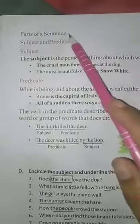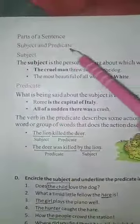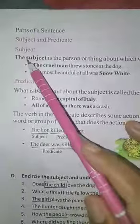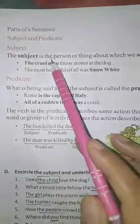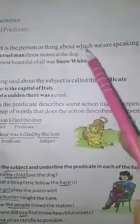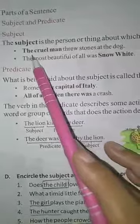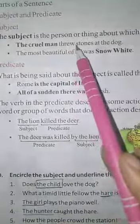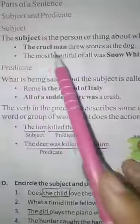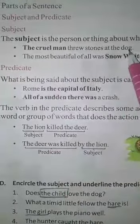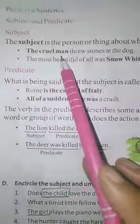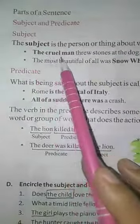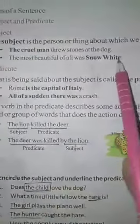Next, parts of a sentence. What are the parts of a sentence? Subject and predicate. What is a subject? The subject is the person or thing about which we are speaking in the sentence. As you can see in the example, 'the cruel man' is the subject in this sentence — 'threw stones at the dog' — and the sentence is talking about the cruel man. So this is the subject of this sentence.